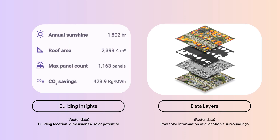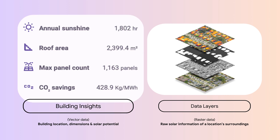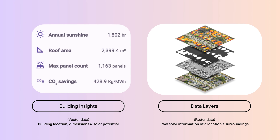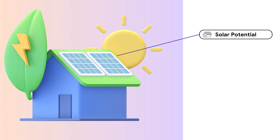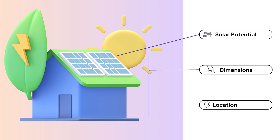Currently, solar companies can choose from two functions: Building Insights and Data Layers. The Building Insights function provides high-level information about the solar potential, dimensions, and location of the building.